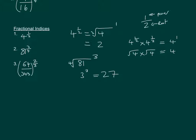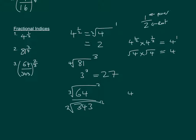And then finally for this section, we've got 64 over 343 to the power of 2 over 3. So for each number we're finding the third root and then squaring it. The third root of 64 is 4, and the third root of 343 is 7, and we need to square both of those. That leaves us with 16 over 49.